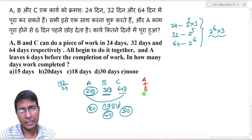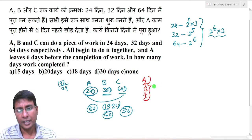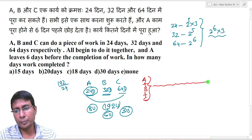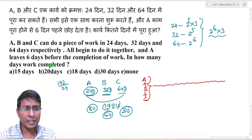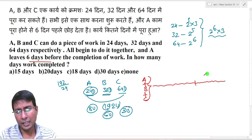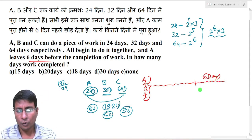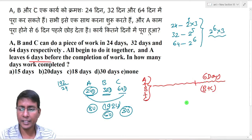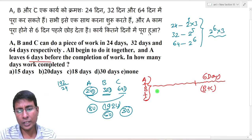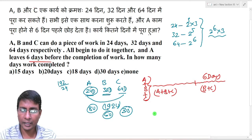Now in the question, A, B, and C all start working together. However, 6 days before the completion of the work, A leaves. This means the last 6 days of work will be done by B and C only, since A has left. Before that, A, B, and C are all working together.